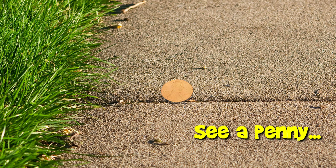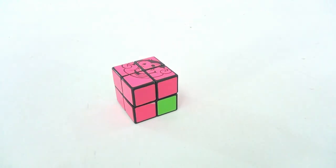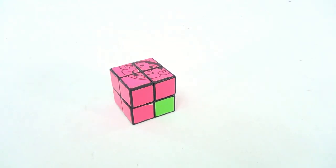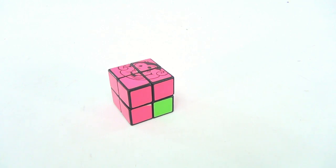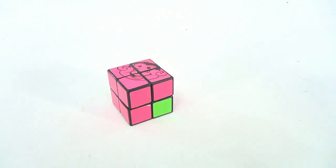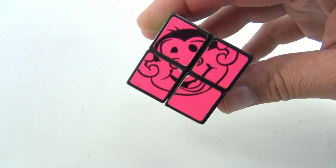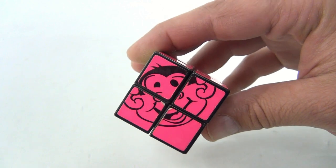You are now watching a Lucky Penny Shop product feature. Hey there folks, this is a Rubik's Cube 2x2, and it's so simple even a monkey can do it. How funny, making us feel like monkeys.